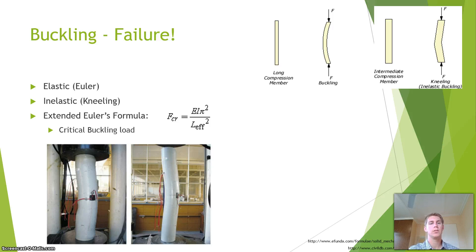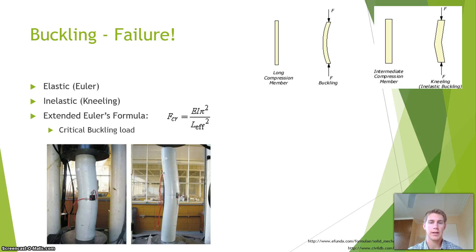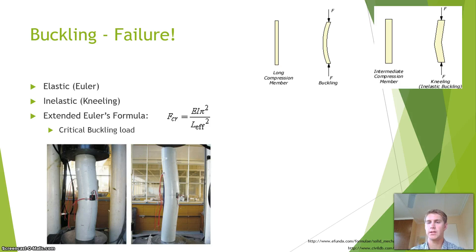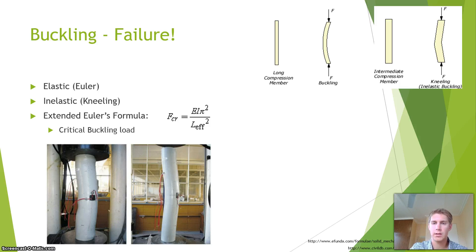So buckling — Euler's formula can be considered for simply supported columns under an external load. In the formula, F is the external axial load, E is Young's modulus for the column material, I is the area moment of inertia, and the length is the length of the column. This gives a prediction of under what load a column may fail. In long compressive members, failure looks like buckling; in intermediate compression members, you'll see inelastic buckling. The extended Euler's formula describes the critical buckling load that can be applied to a column.